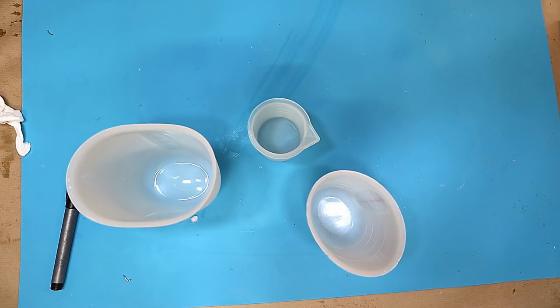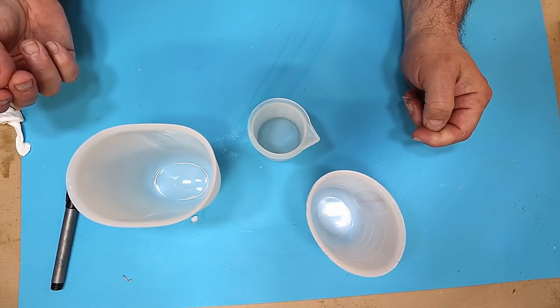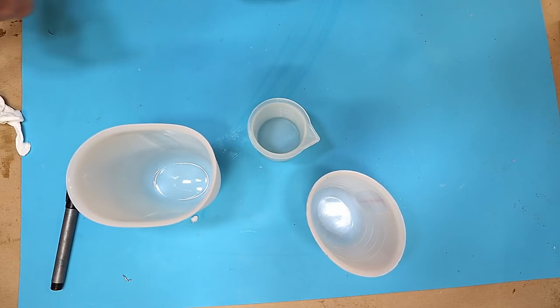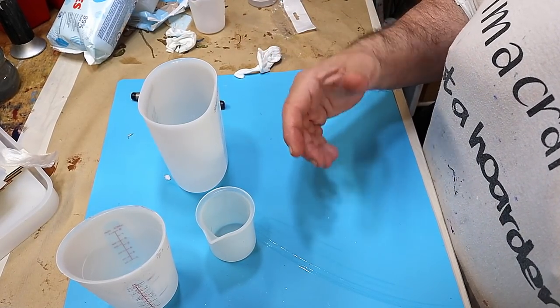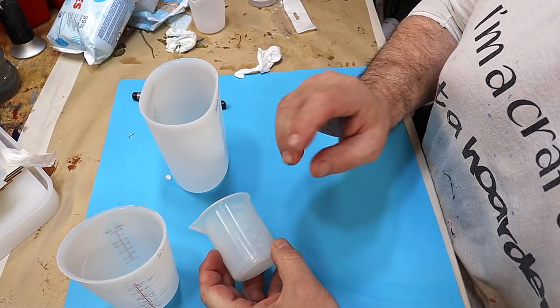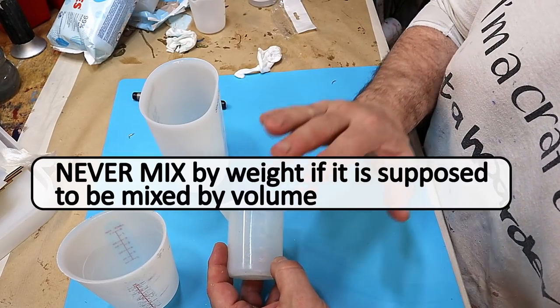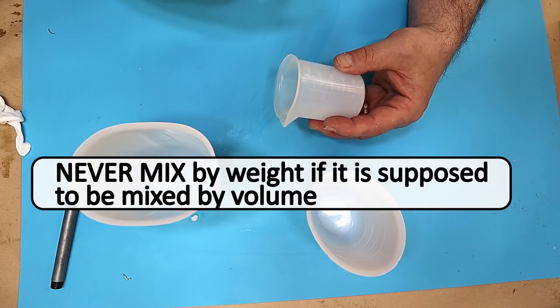Always read the instructions of your resin as well because some say that you need two parts part A or two parts part B to one part part A or one part part B. Most of the resins that I use are equal parts and that does make life a lot easier. But try to be as accurate with your measurements as possible because that way you're going to always get the best results.